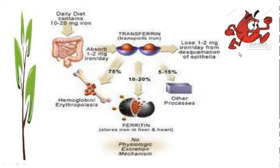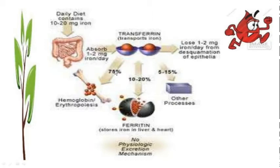So as you can see, the iron is absorbed from the GI tract, especially in the jejunum and duodenum, and around 10 to 15 percent of the iron is absorbed of the whole dietary capacity. It is then transported as transferrin protein, and around 75 percent is used for erythropoiesis or hemoglobin synthesis, which is mainly responsible for oxygen carrying. Then another 10 to 15 percent tends to be stored as ferritin in liver and heart, and then 5 to 15 percent for other processes.